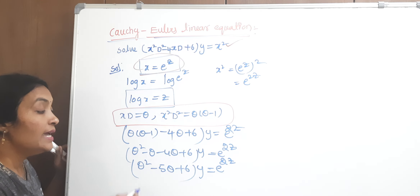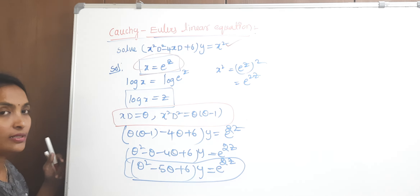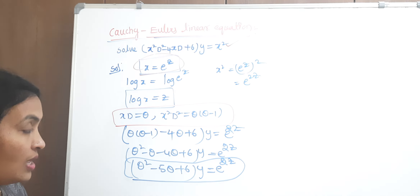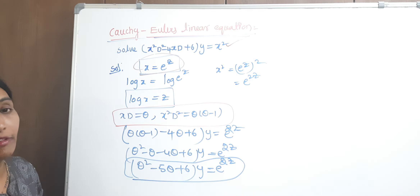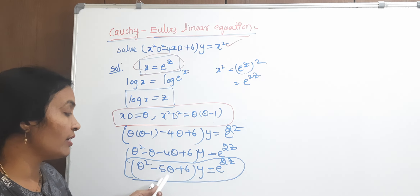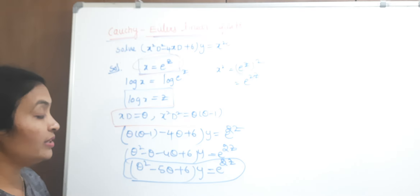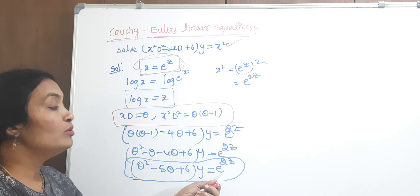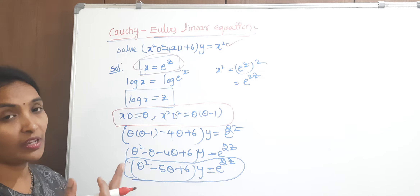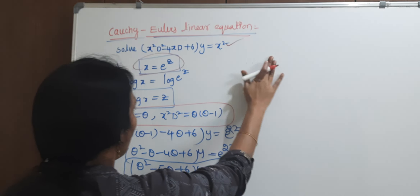The formula: when f(D) of y equals e to the power of ax. The given equation is in the form f(theta) of y equals e to the power of ax. We will calculate the complementary function yc using f(theta), and calculate the particular integral using e to the power of 2z.